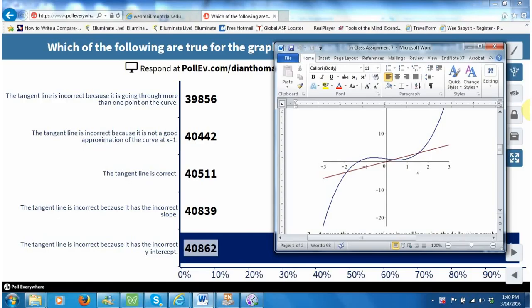So actually, the second one could be a choice, and a number of students made this choice in the other section, that the tangent line is incorrect because it's not a good approximation to the curve.